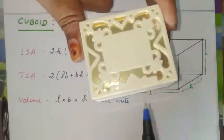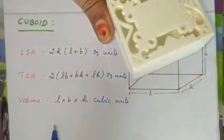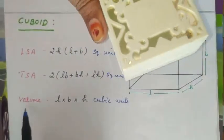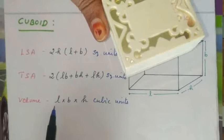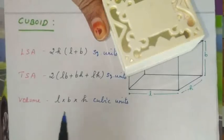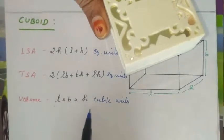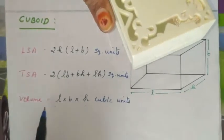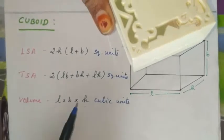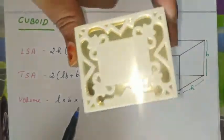The TSA of a cuboid is 2 into (LB + BH + LH). The volume of the cuboid is length times breadth times height, i.e., L × B × H cubic units.